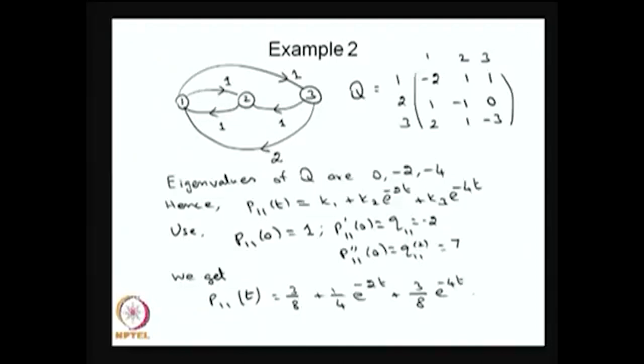Since it is a finite state CTMC, there are many ways to get the time-dependent solution. Basically, you solve the system of differential equations with the initial condition. Here, the Eigenvalue method is used: find the Eigenvalues for the Q matrix, then use Eigenvalue and Eigenvector concepts to get P₁₁(t) with unknowns k1, k2, k3. The initial condition is then used to find k1, k2, and k3.